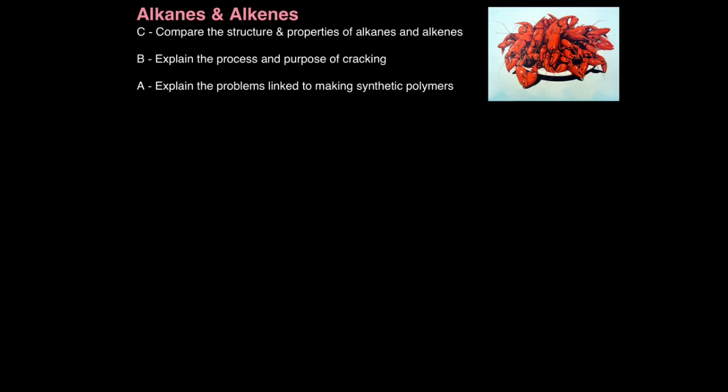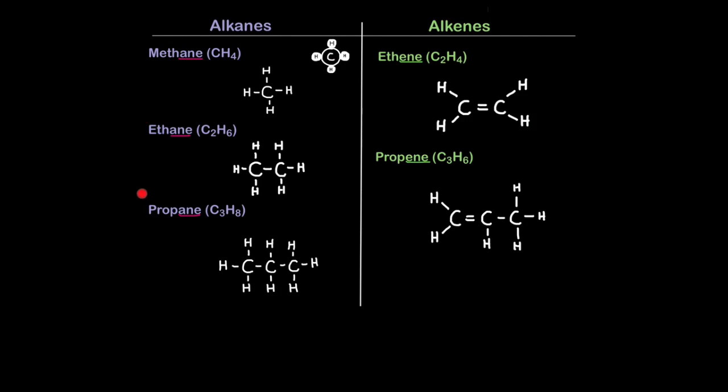Crude oil was a mixture of different hydrocarbon molecules. Alkanes and alkenes are examples of hydrocarbon molecules, but they are different. One very easy way to tell them apart is the way the word sounds. Methane is an alkane, ethane is an alkane, propane is an alkane.